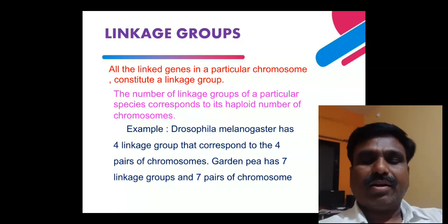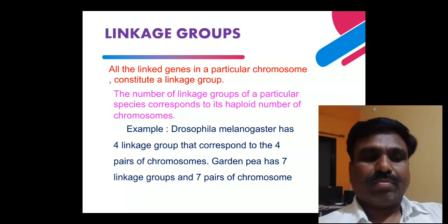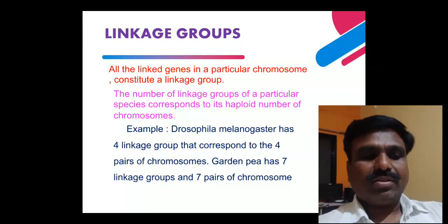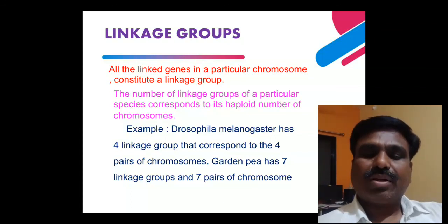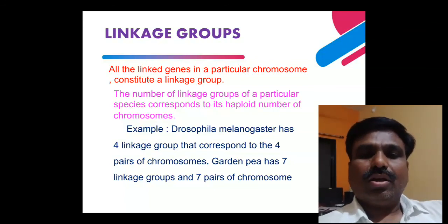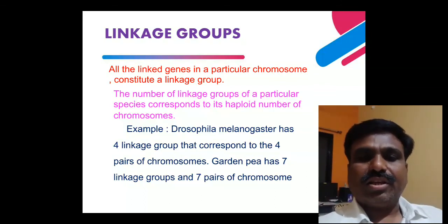The garden pea plant, Pisum sativum, has seven linkage groups, having seven pairs of chromosomes. These are examples of linkage groups covering complete linkage, incomplete linkage, linked genes, and linkage groups.